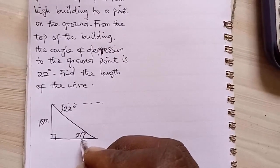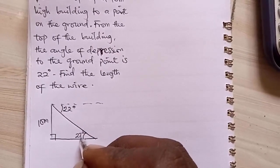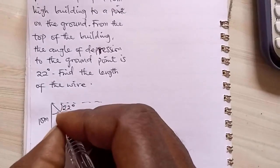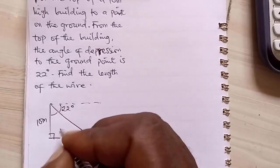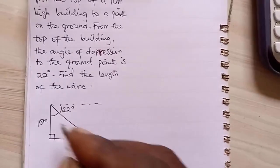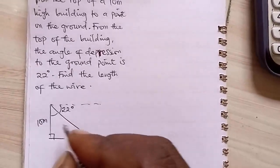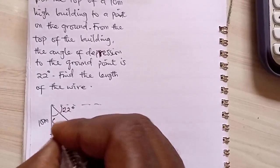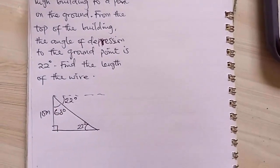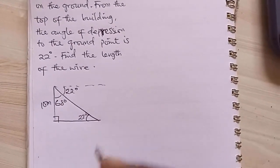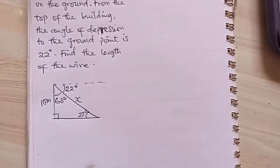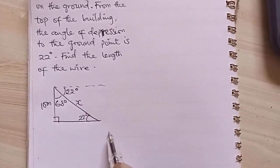90 plus 22 will give you 112. And if you subtract that from 180, which is the total angle in a triangle, you get 68 degrees. So now that we've gotten this, we want to find the length of the wire that was stretched, the length.